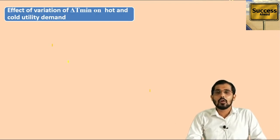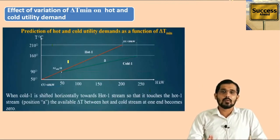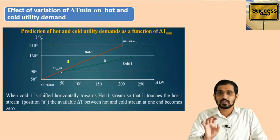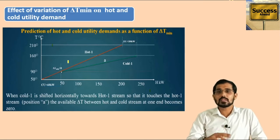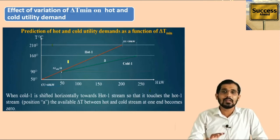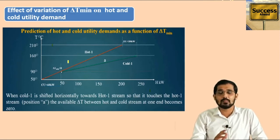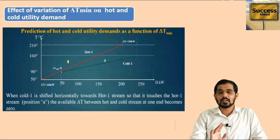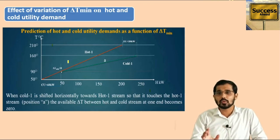Now we will see the effect of delta T minimum on hot and cold utility demand. In the TH diagram, there are two lines: the red line for the hot stream and the green line for the cold stream. In process industries, various streams are available — H2, H3, and so on for hot streams, and C1, C2, C3 up to CN for cold streams — all of which can be plotted in the TH diagram using MCP·ΔT to calculate enthalpy values. In your exam, this theoretical question can be asked for 7 marks.